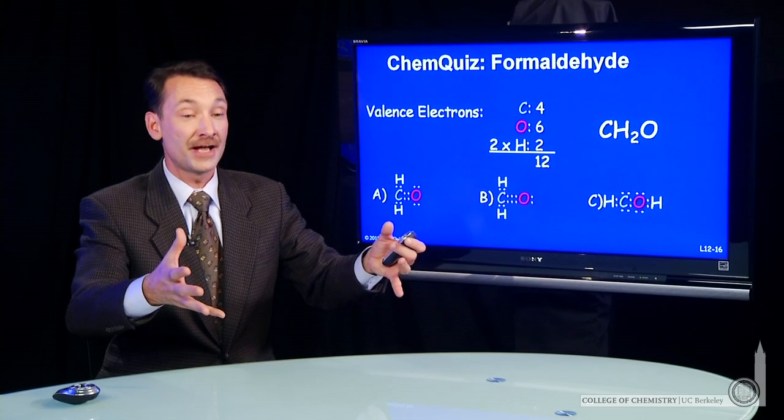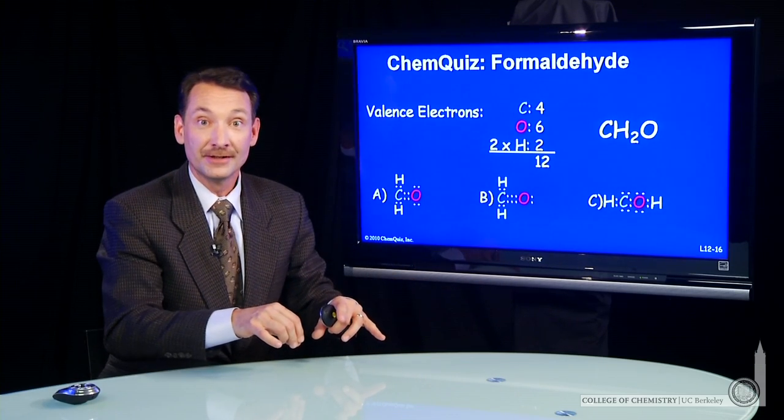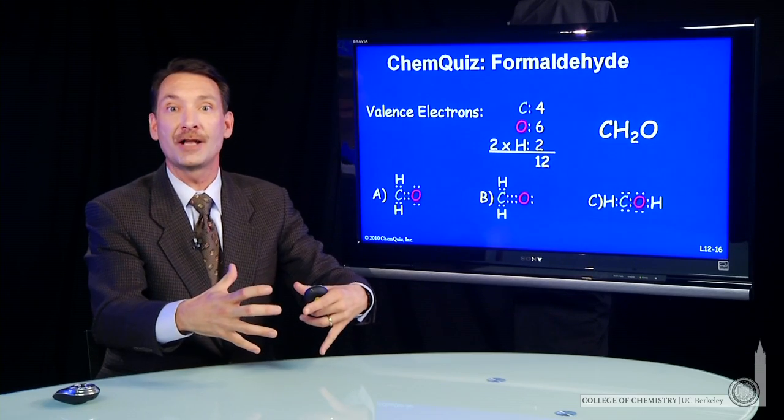You write a Lewis electron dot structure by taking your valence electrons and spreading them out to make bonds and hold the whole molecule together.